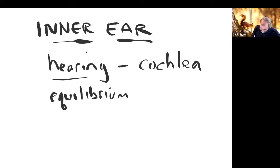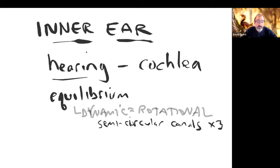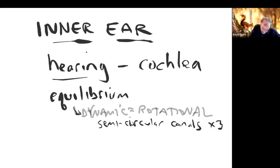There are two sub-branches of equilibrium. First is dynamic equilibrium, also called rotational equilibrium — which way is your head spinning — and that's going to be the semicircular canals. There are three of them, letting you tell if your head is turning horizontally, dipping up and down, or rolling side to side.